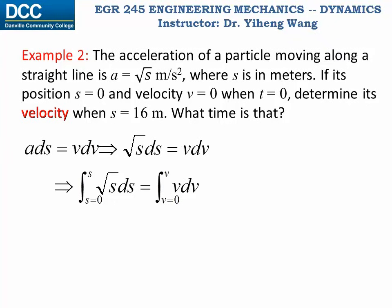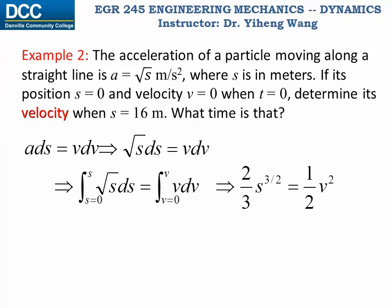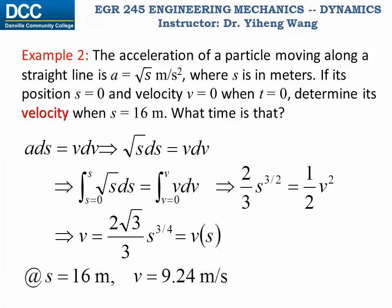Again, pay attention to the lower integration limits. These are from the initial condition information given in this problem statement. And after integration we get this, rearrange, and we get velocity as a function of position. Now we can evaluate that at position s equals to 16 meters: velocity is 9.24 meters per second.